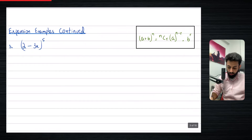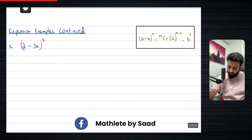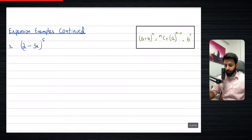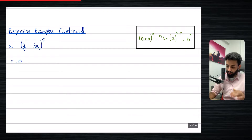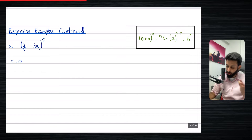This is the formula that we're going to be using that I've written right over here. The formula never changes — this is the formula we're going to be using over and over again. We start by taking r as zero. Since the power is five, the total number of terms that we will get will be six.